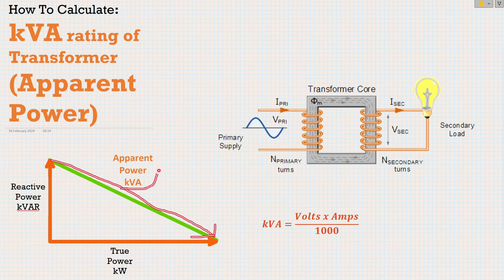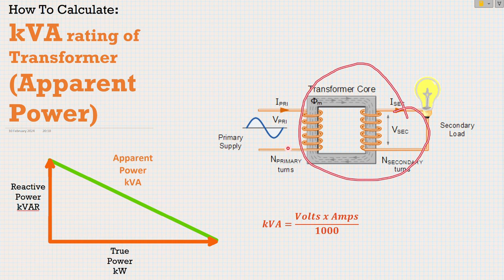So the kilovolt rating, kilovolt amp rating of a transformer, the apparent power, is when we look at it like this, before anything happens, how much power could we produce? And that's our kilovolt amps.